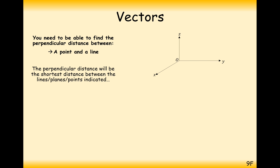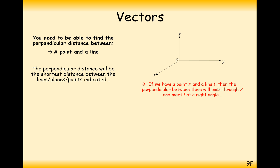Let's have a look at how we would do this. The best thing to do with any of these vector questions is to draw yourself a nice diagram. You have a point, you have a line, and you would like to find the shortest distance between that point and that line. The shortest distance line will meet the line at a right angle. Any other angle, you could use Pythagoras' theorem to show there is a shorter distance, where the other side was a hypotenuse compared to the shorter side on the right angle triangle. So it's definitely going to be at a right angle.